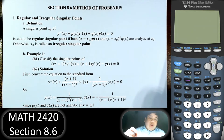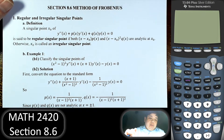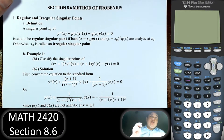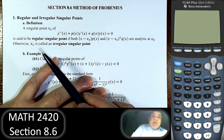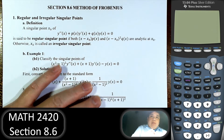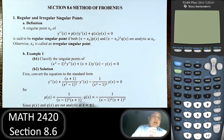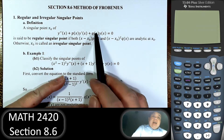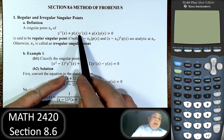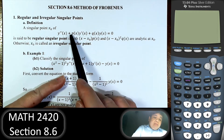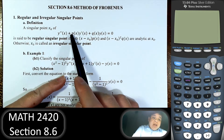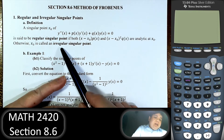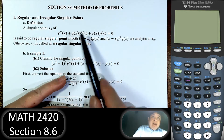Hi everybody, welcome to another video in differential equations, Section 8.6, method of Frobenius. In this section we will write the solution for a special type of singular point. Up to this point we can only write the power series solution for an ordinary point, meaning that p of x and q of x have to be analytic — meaning that at x-naught there will be a power series representation for p of x and q of x, or loosely speaking, p of x and q of x have to be defined.